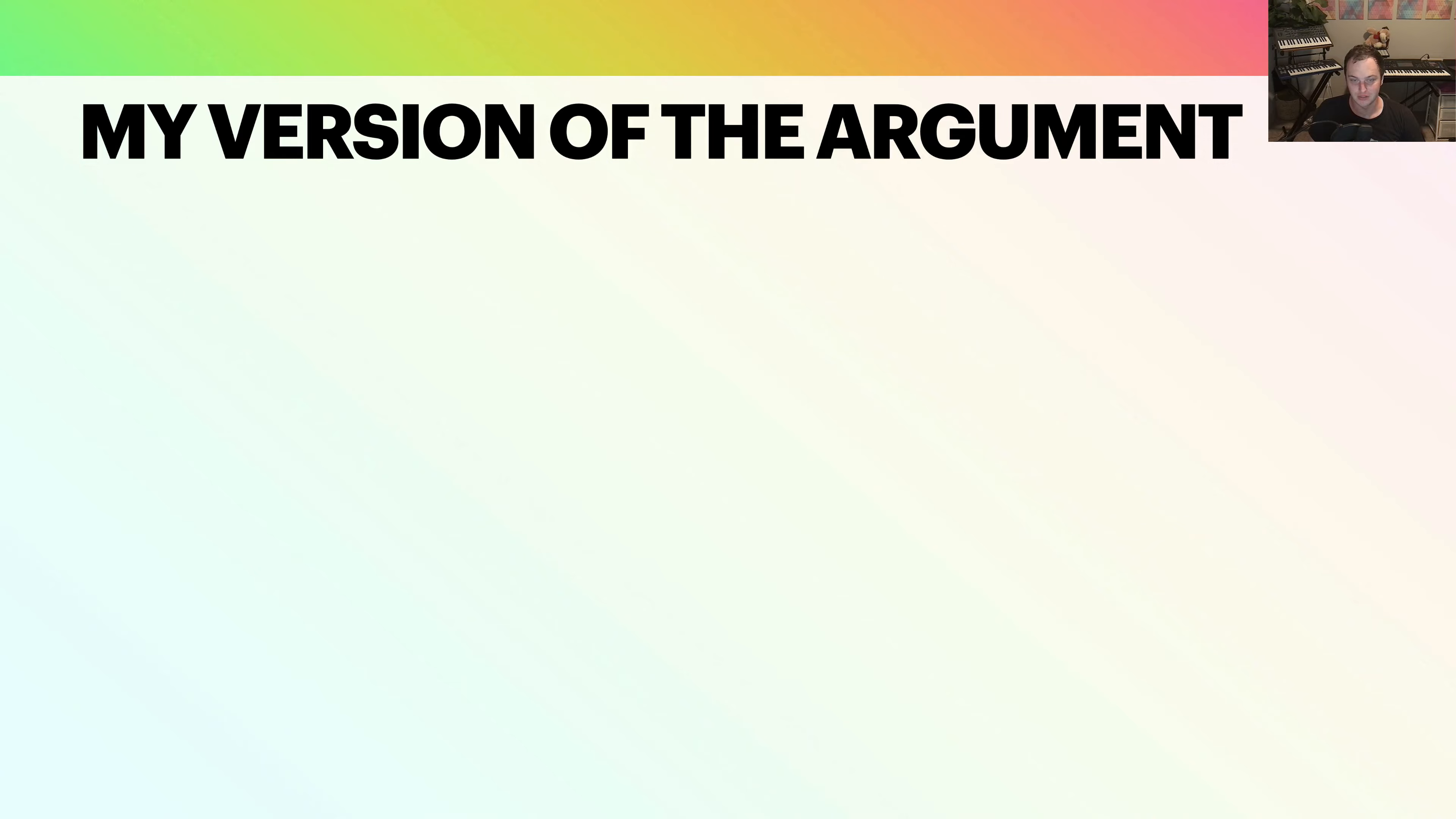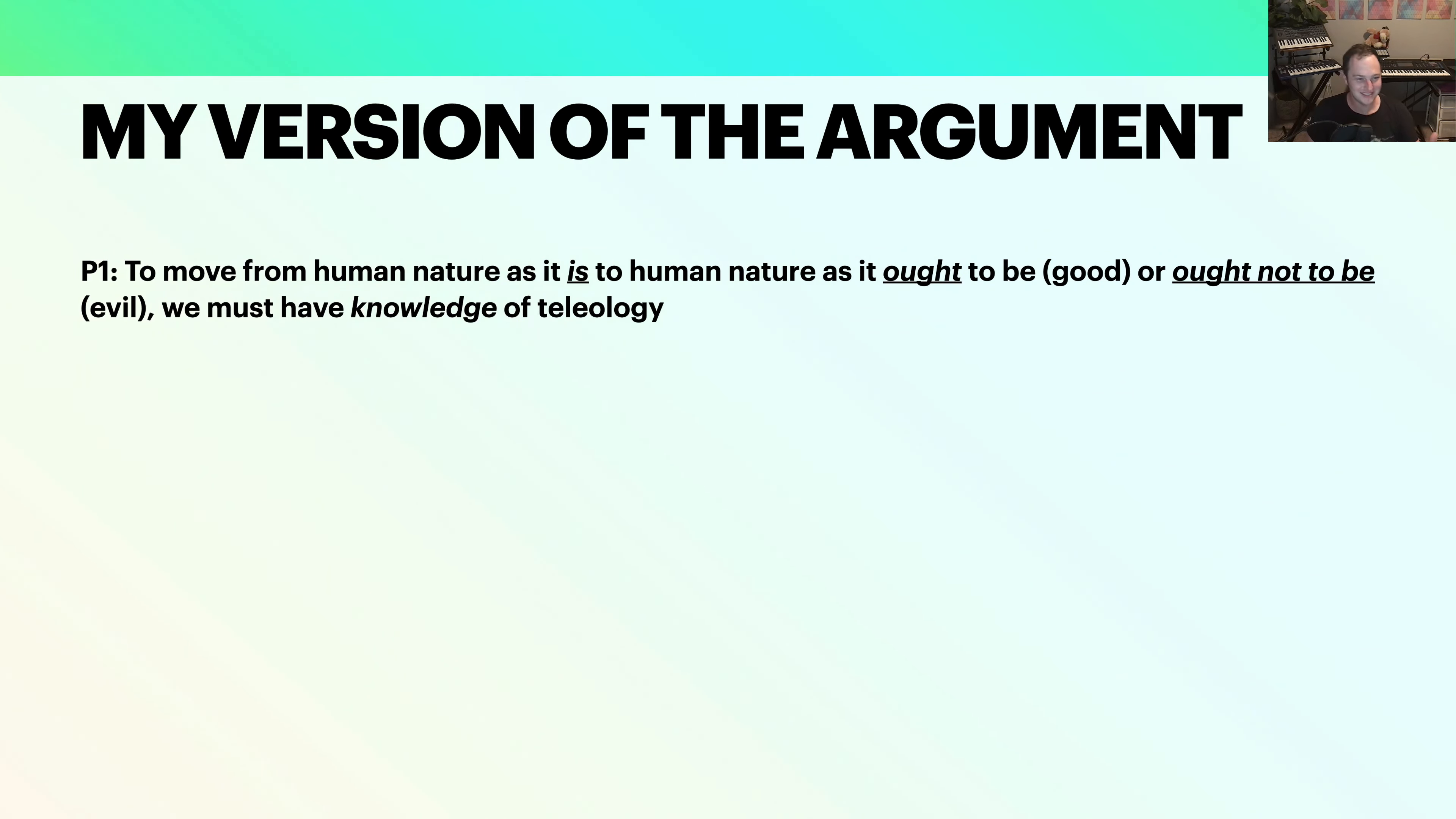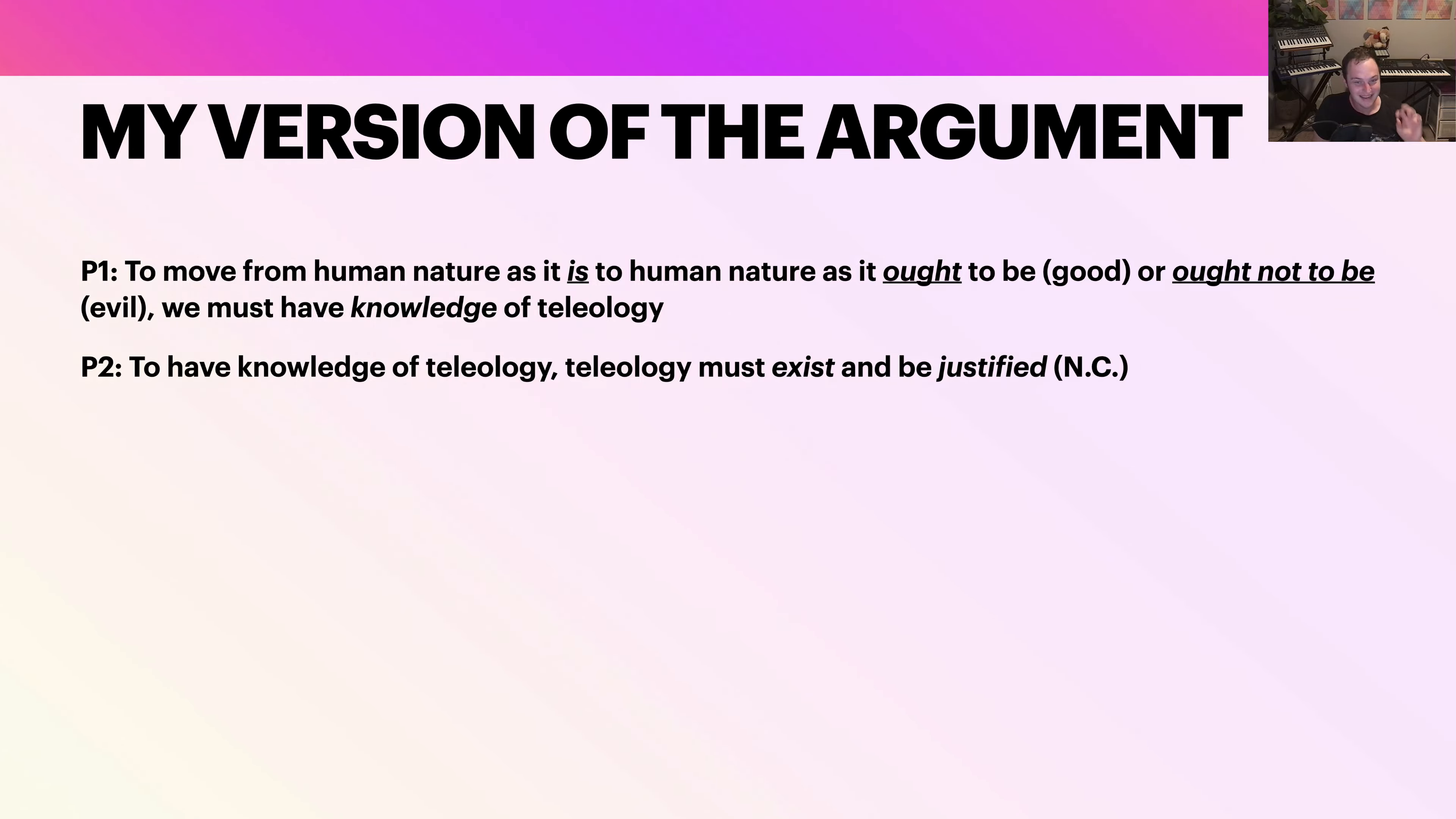And then you can make a more sophisticated version of this argument. And this is where I would go if I was really trying to hammer this point home and make the strongest case possible, if I was talking to my philosopher friends or something like that. I actually don't have a lot of philosopher friends. But if I did, this is the way I would put it. Premise one, to move from human nature as it is to human nature as it ought to be, which is good, or ought not to be evil, we must have knowledge of teleology. And what is knowledge? It's at least justified true belief. So it must be true and we must have justification.